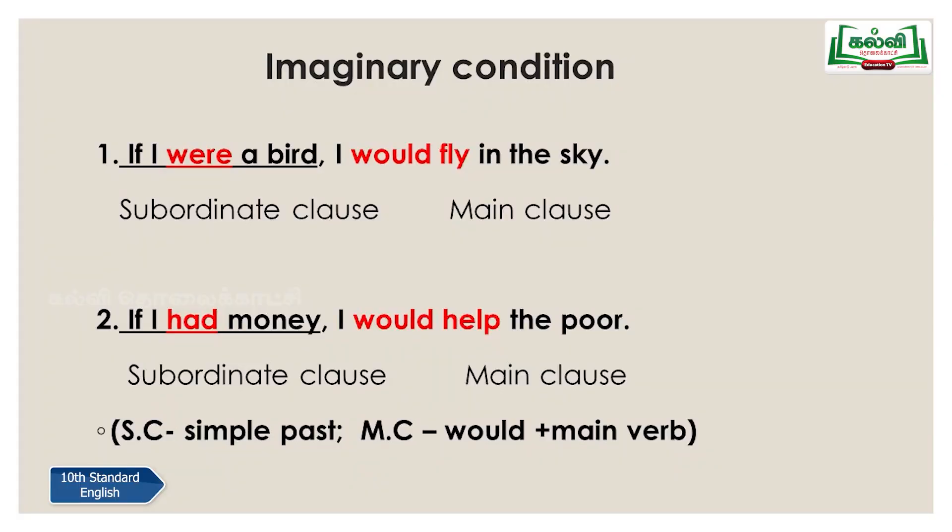In the imaginary condition, when the subordinate clause uses 'were', the main clause uses 'would + main verb' — for example, 'would fly'. 'I would fly in the sky' is the main clause. Second example: 'If I had money, I would help the poor.' The subordinate clause is 'if I had money'; the main class is 'I would help the poor.' Not only 'were', we can also use 'had' in the imaginary condition. So in the subordinate clause we use simple past ('were' or 'had'); in the main clause we use 'would + main verb'.